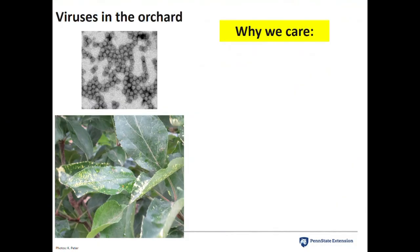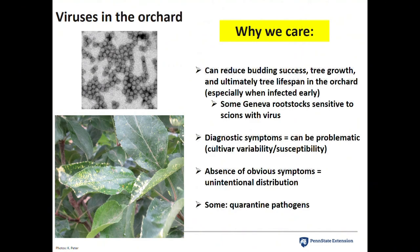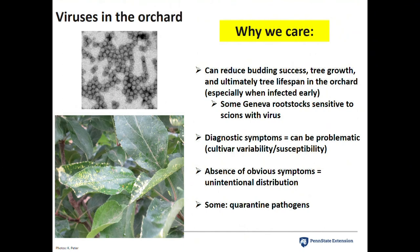Here's an example of apple mosaic virus up close. Why do we care? It can reduce budding success, which is critical in tree fruit production, and can influence tree growth and the lifespan of the orchard, especially when trees are infected early. Viruses are especially important with some of the Geneva rootstocks — the it-rootstocks everyone's trying to get. We've learned the hard way that some of them are very sensitive to virus, so they must have scion wood that is completely virus-free for budding success to take place.